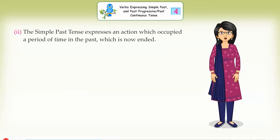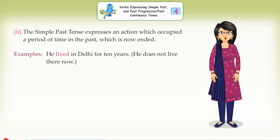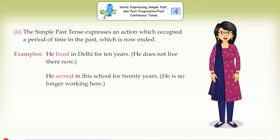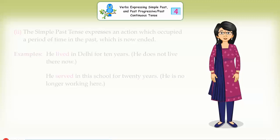Second, the simple past tense expresses an action which occupied a period of time in the past which is now ended. Examples: He lived in Delhi for 10 years — he does not live there now. He served in this school for 20 years — he is no longer working here.